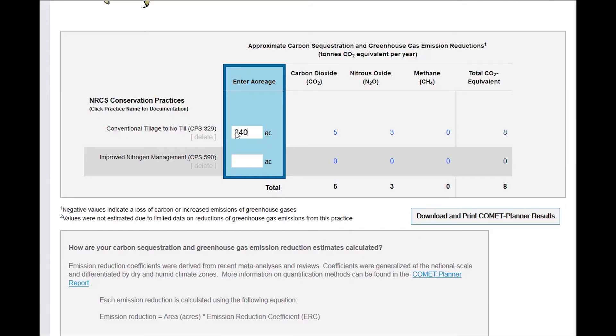Upon selecting the conservation practice, enter the total acreage to which the practice will be applied. When acreage is entered, values from major greenhouse gases are populated, as well as the total emissions reduction as associated with the practice. All emission estimates are reported as total carbon dioxide equivalents.